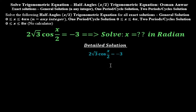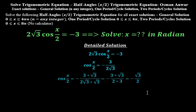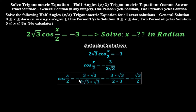2√3 · cos(x/2) = −3. Divide both sides by 2√3, then cos(x/2) = −3 / (2√3). Multiply the top and bottom by √3, so that becomes cos(x/2) = −3√3 / (2√3 · √3). Since √3 · √3 = 3, this equals −3√3 / (2·3). The 3's cancel and this equals −√3/2. So cos(x/2) = −√3/2.